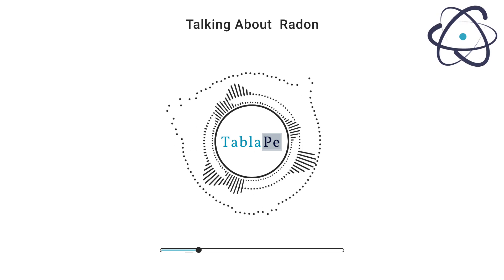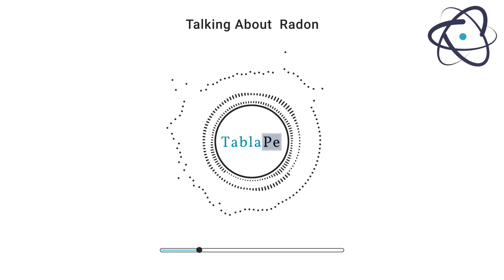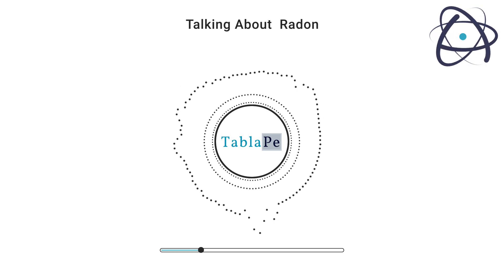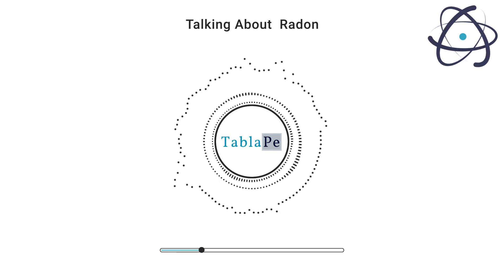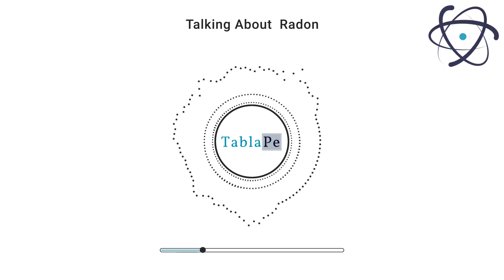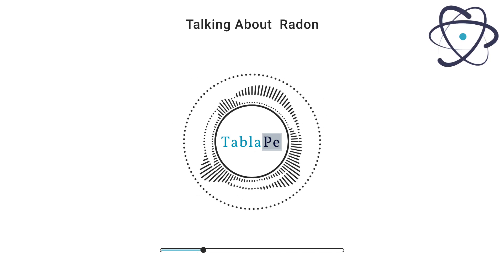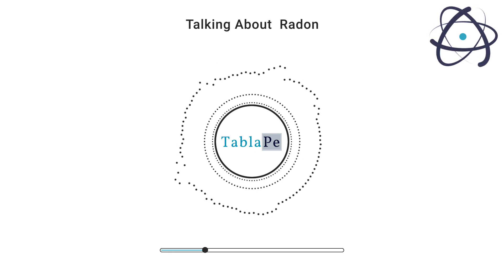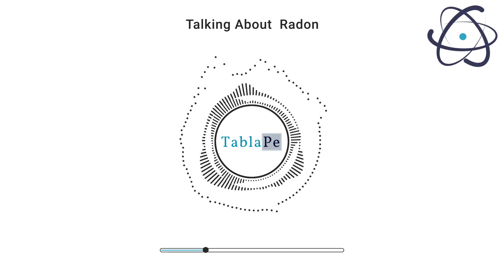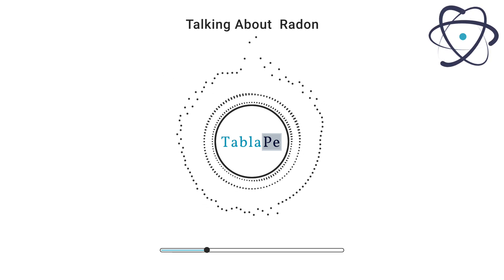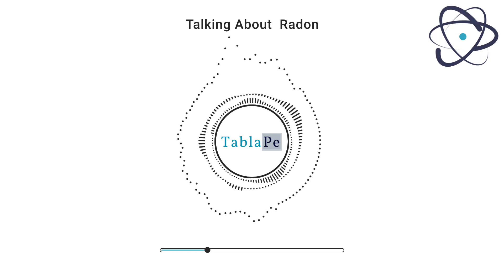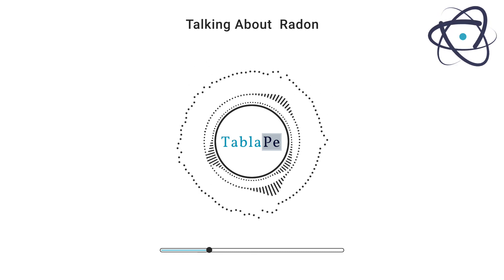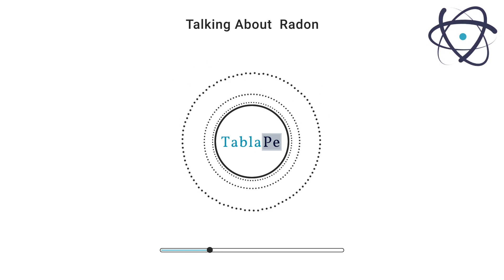What sets radon apart is its radioactive nature — it's the heaviest and most unstable of the noble gases, with no stable isotopes. Radon-222 and radon-220 are the most common isotopes, and they decay by emitting alpha particles. When inhaled, its radioactive decay products can damage lung tissue and increase the risk of lung cancer, making it a concern when found in high concentrations indoors.